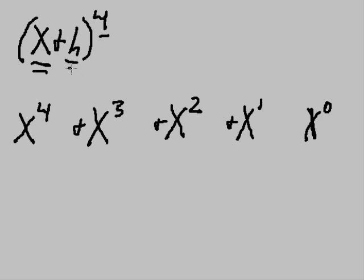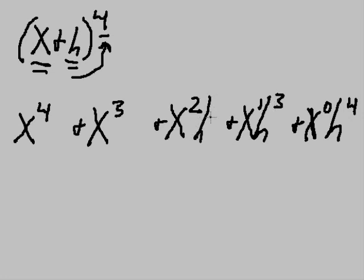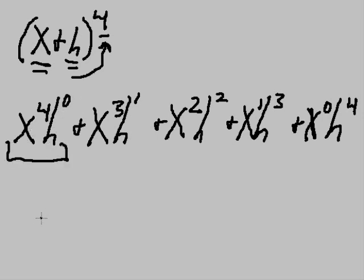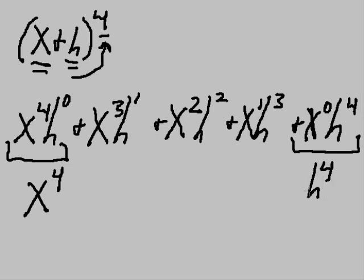Now we start with the guy on the right — the H. We'll start with the four and go to the right. We got H to the fourth — oh, I forgot to put the positive sign in there. And then we'll take one away from that: H to the third. And then we come over here and we got H to the second. And we come over here, H to the first. And we come over here and do it again — H to the zero, which is one. One times X to the fourth is going to give me X to the fourth. And this guy over here is one times H to the fourth. X to the zero is one, so anything times one is itself. So this guy is H to the fourth, with a positive sign.